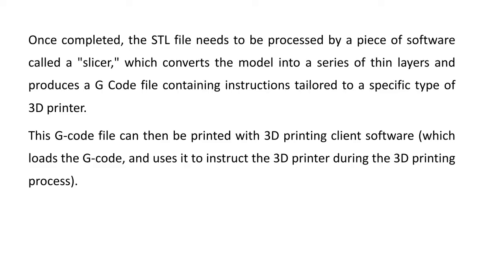After repairing the file, the STL file needs to be processed by a piece of software called a slicer, which converts the model into a series of thin layers and produces a G-code file containing instructions tailored to a specific type of 3D printer. This slicer software slices the 3D model into different layers because we are depositing the material layer by layer. The G-code file is then used to instruct the nozzle to deposit the material layer by layer.